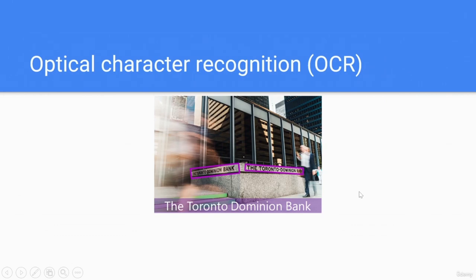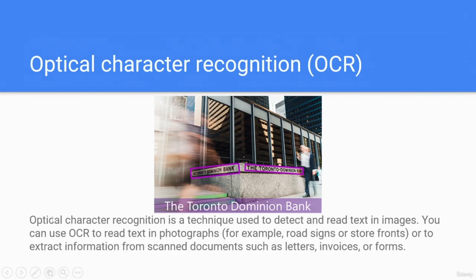Optical character recognition (OCR) is a very popular technique used to detect and read text in images. You can use OCR to read text in photographs such as road signs or storefronts, or to extract information from scanned documents such as letters, invoices, or forms. Here, the text 'Toronto Dominion Bank' has been detected from the image.